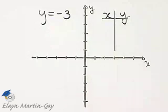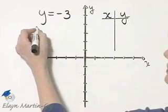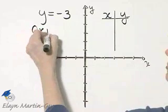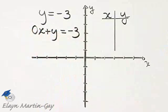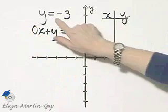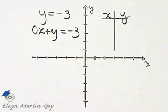Let's graph this linear equation. If it helps, you can think of this as 0x plus y equals negative 3. It will not affect the ordered pair solutions. These are equivalent equations.